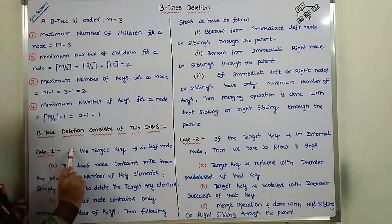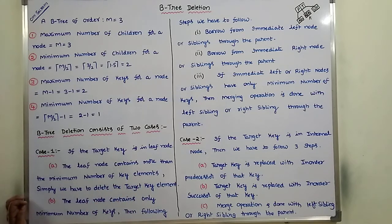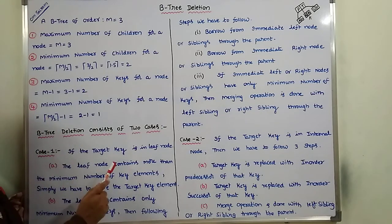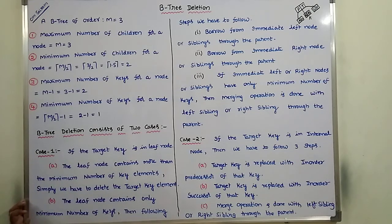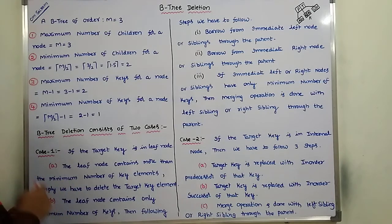If the target key element is present at the leaf node, we follow two sub-cases. First sub-case: the leaf node contains more than the minimum number of key elements, where the minimum is ceil(M/2) minus 1. If the leaf node contains more than the minimum number of key elements, we simply perform the deletion and delete the target key element. For example, if the leaf node contains two key elements and the minimum is 1, we simply delete the target key.